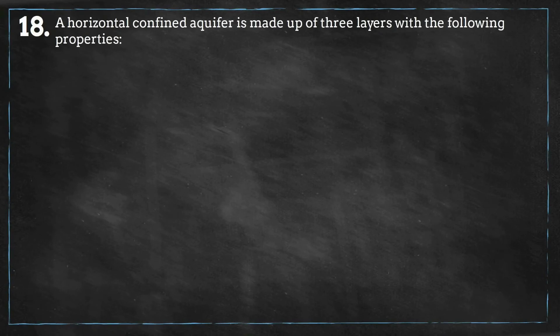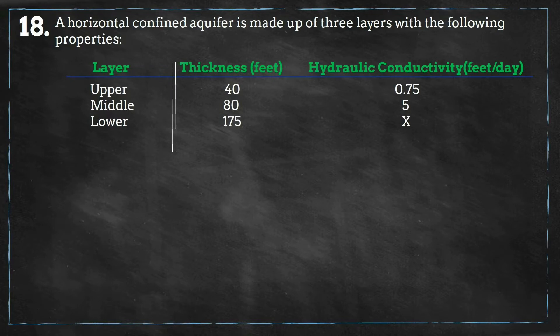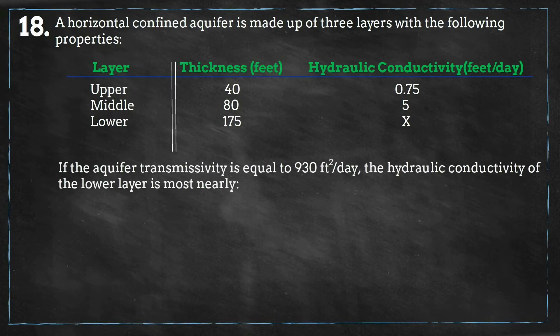A horizontal confined aquifer is made up of three layers with the following properties. If the aquifer transmissivity is equal to 930 square feet per day, the hydraulic conductivity of the lower layer is most nearly